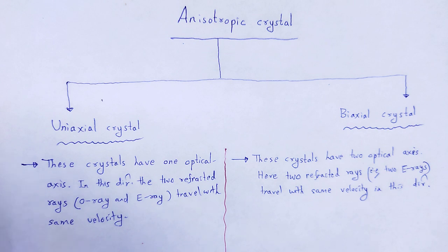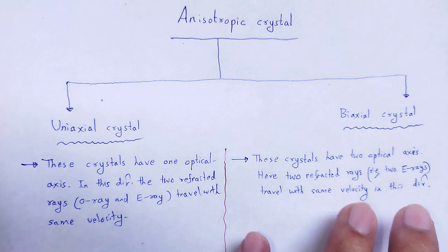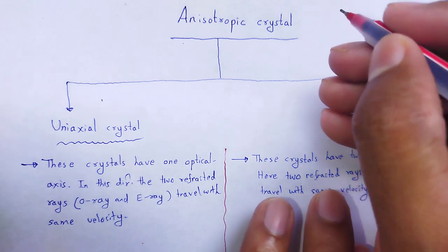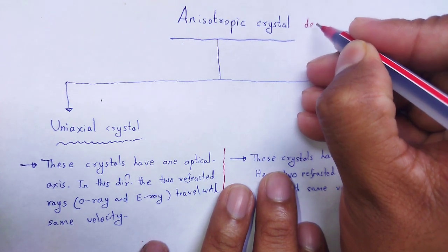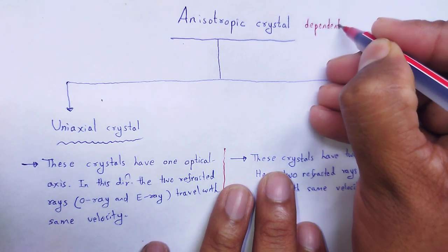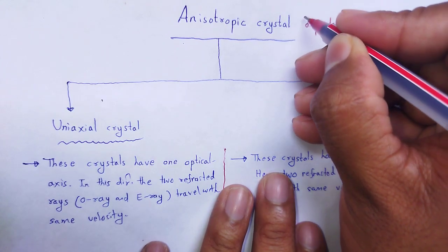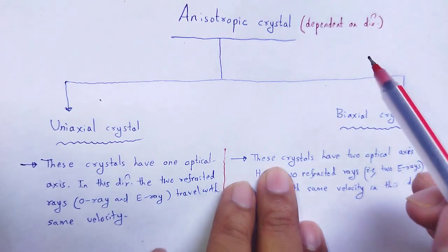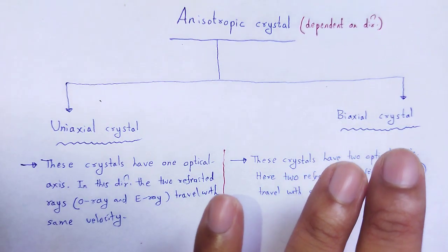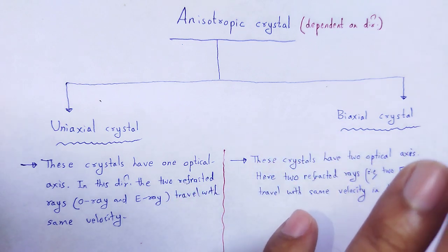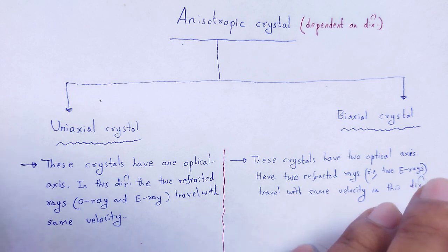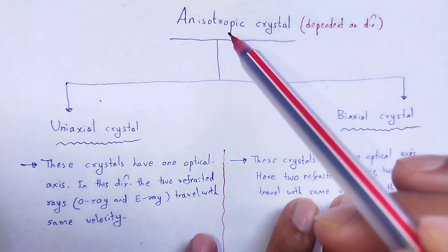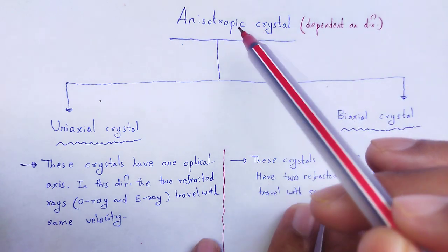What is the nature of an anisotropic crystal? Anisotropic means these crystals are dependent on direction. If we consider the physical properties of a crystal, like thermal conductivity, electrical conductivity, refractive index — these physical properties are different in different directions in the case of an anisotropic crystal.